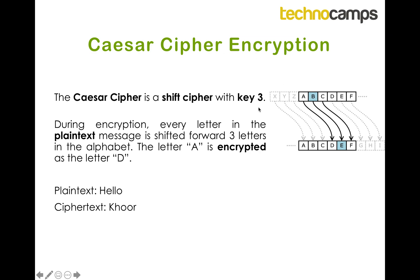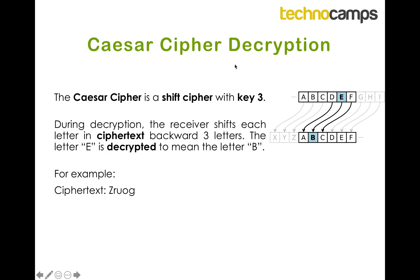Okay, so this is all encryption and we were shifting forward three spaces. If we look at decryption, we've received a cipher text and we need to shift the letters backwards again three spaces because we're doing a Caesar cipher. So we've received the cipher text Z, R, U, O, G. We're going to shift three spaces backwards from Z which is W — we get W, X, Y, Z. Three spaces backwards from R is O, three spaces backwards from U is R, three spaces backwards from O is L because L, M, N, O, and then three spaces backwards from G — if we follow the arrow here we should see that it's D.